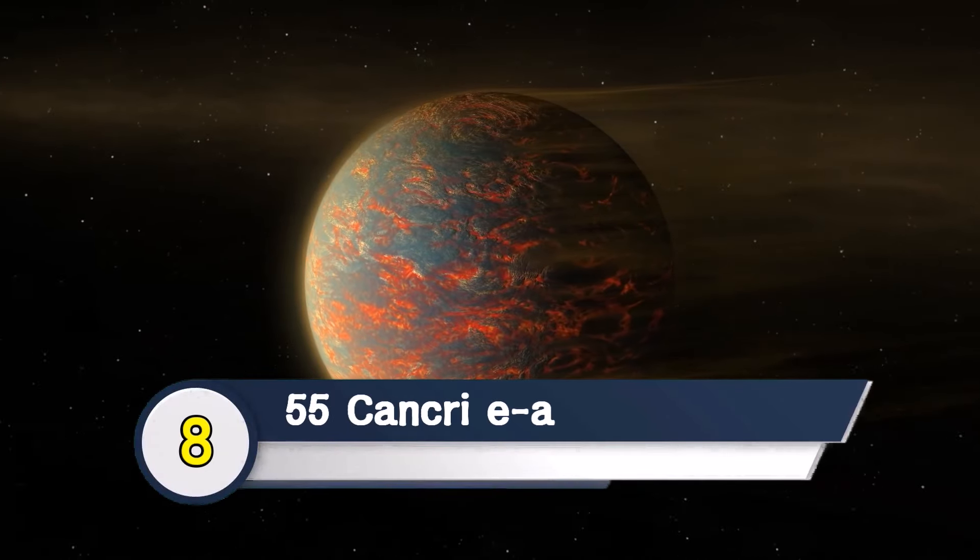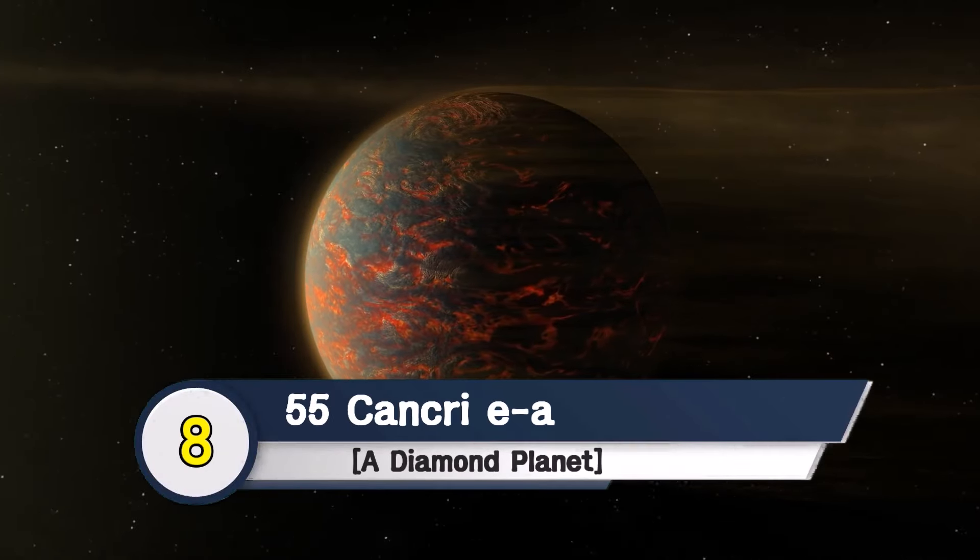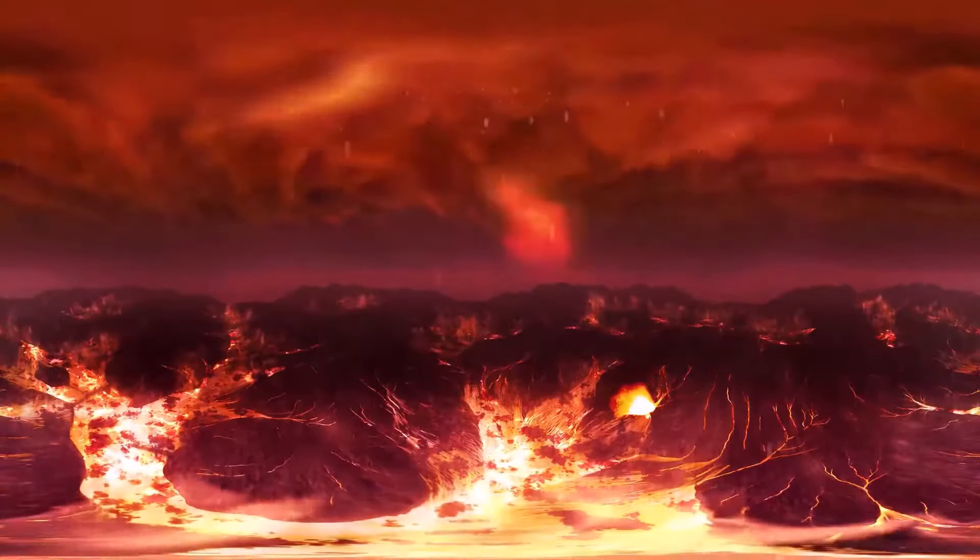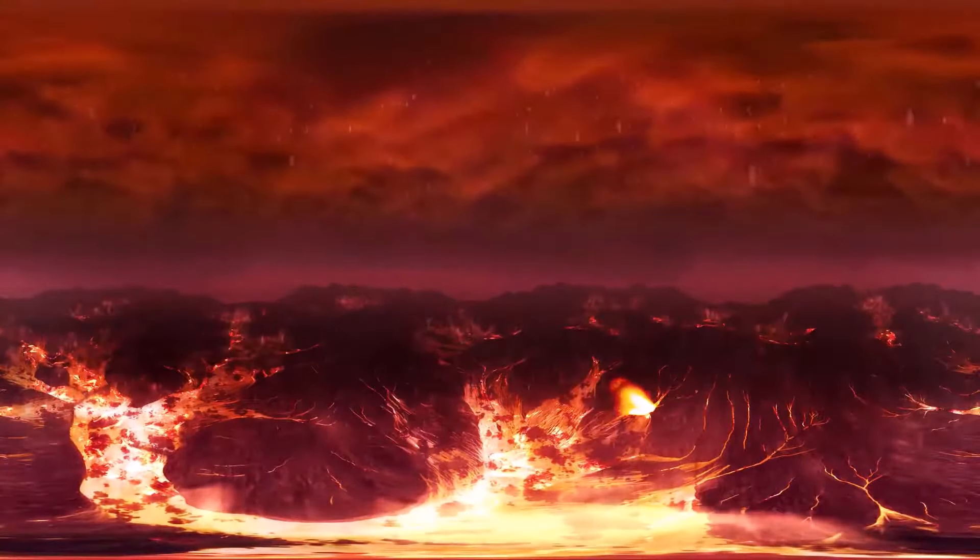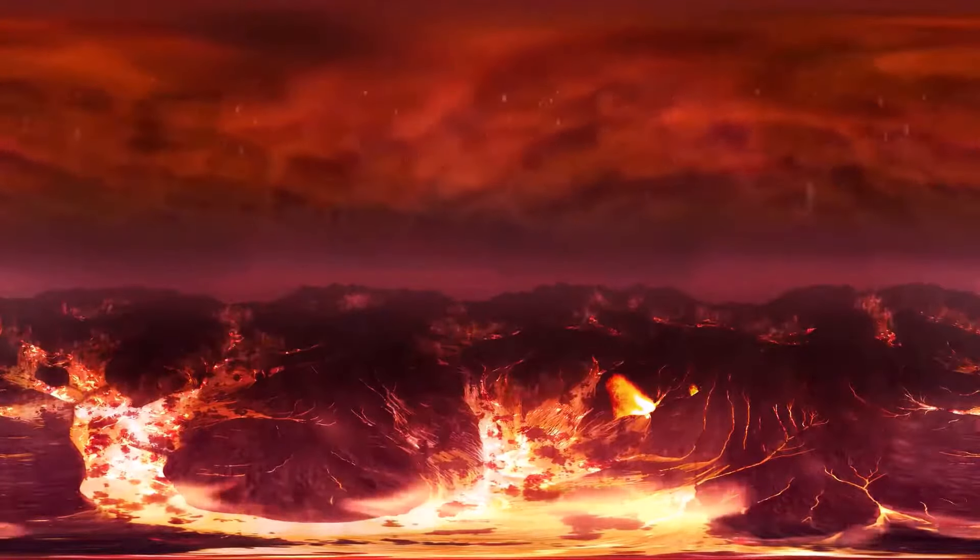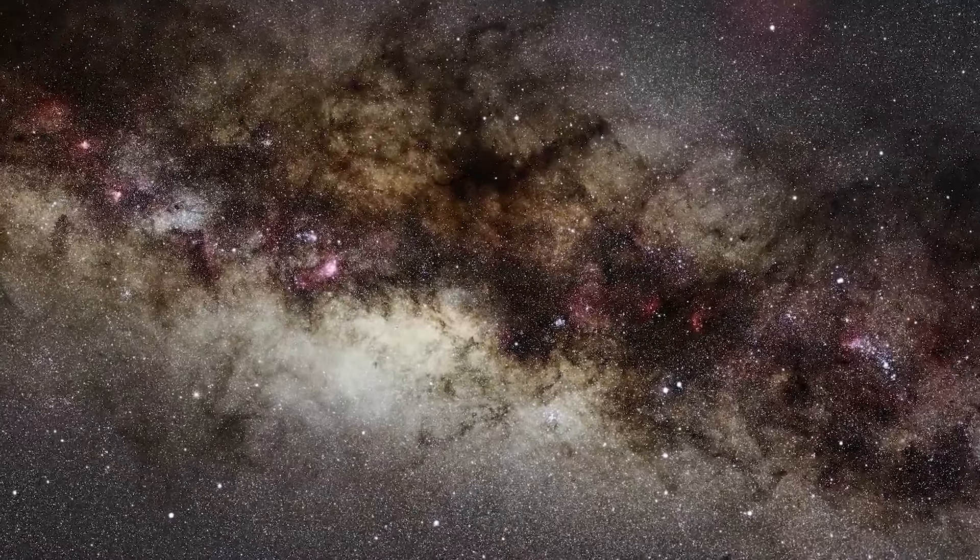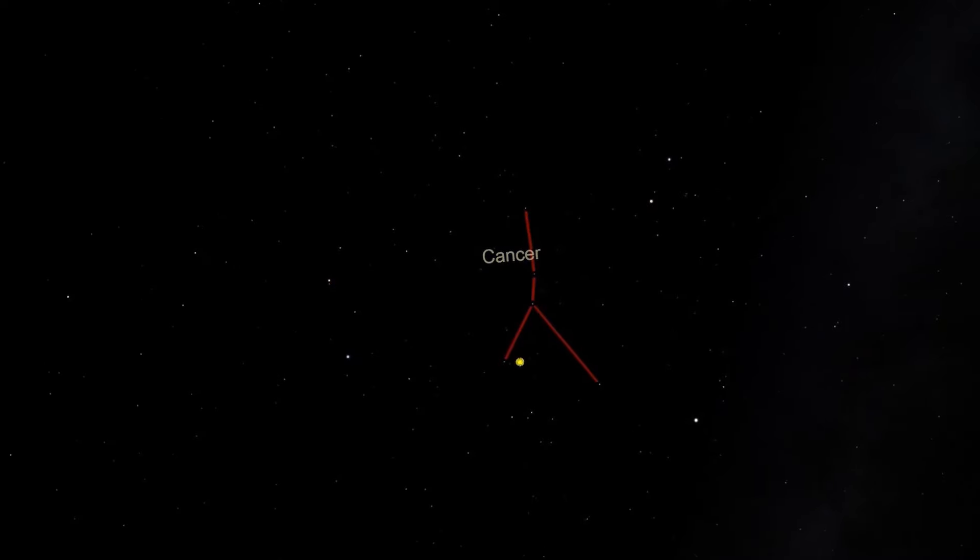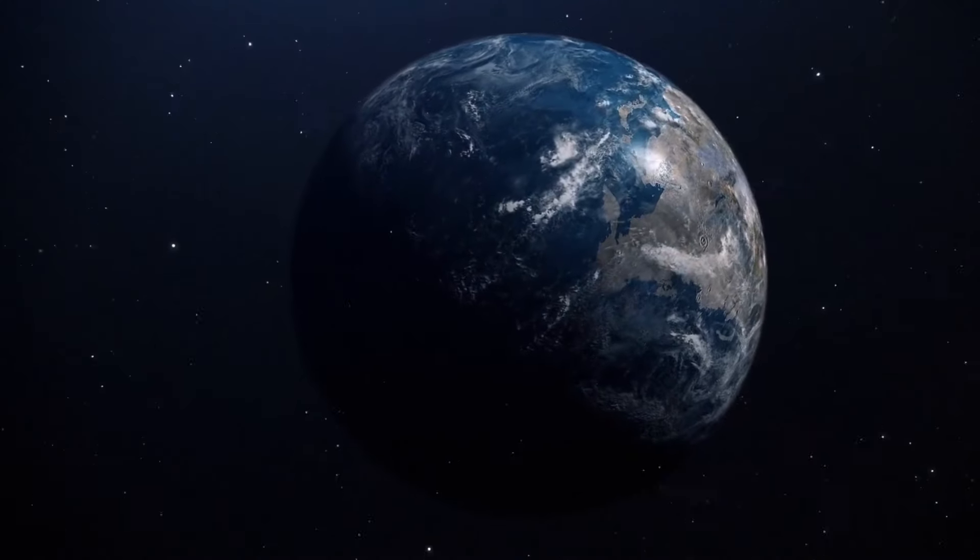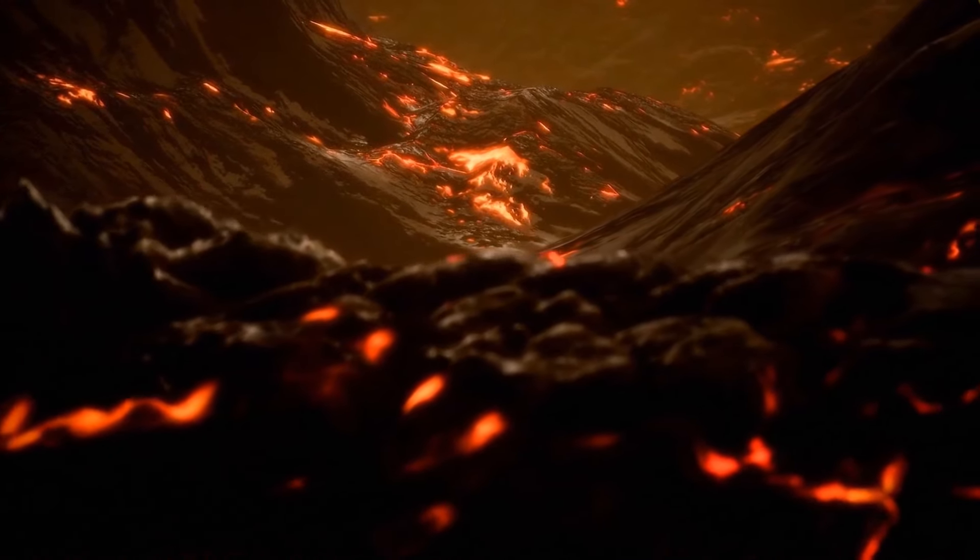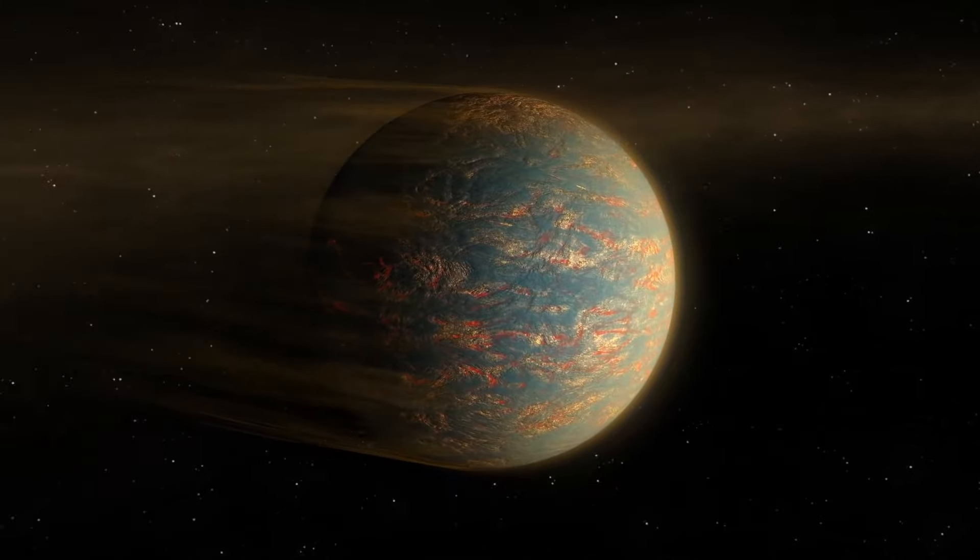55 Cancri E, a Diamond Planet. Alternatively called Janssen, the 55 Cancri E is a super-hot planet located around 40 light-years away in the constellation of Cancer. It's about twice the size of our planet and remains the first ever super-Earth discovered around a main-sequence star.